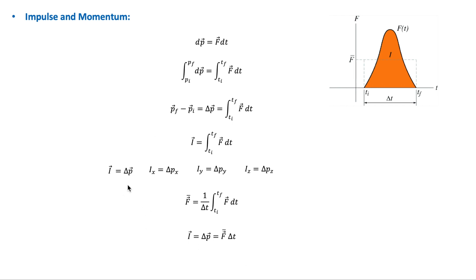The more impulse a force has, the more the linear momentum of the particle will change. The direction of the impulse is in the same direction as the change in momentum. If F has a constant direction and its magnitude varies with time, the average of F can be written accordingly, and so the impulse equals F-average times delta-t. F-average is a constant force that gives the same impulse as the varying F.